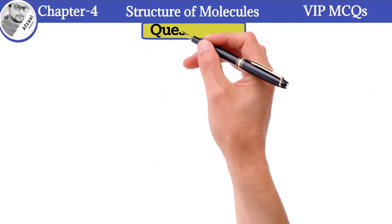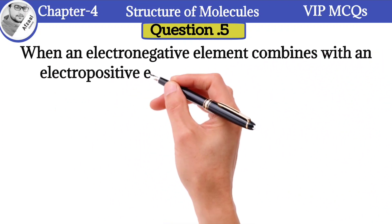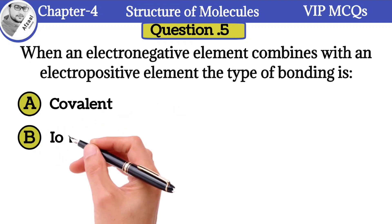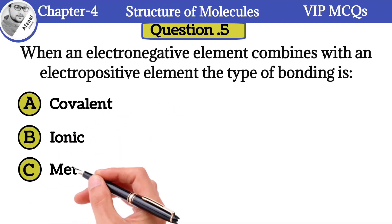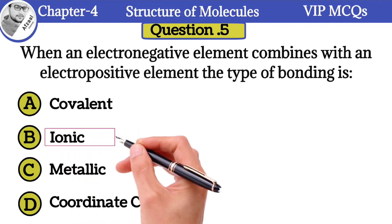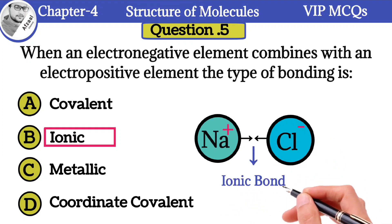Question number 5: When an electronegative element combines with an electropositive element, the type of bonding is: A) Covalent, B) Ionic, C) Metallic, D) Coordinate covalent. The correct option is ionic. For example, sodium is an electropositive element containing positive charge, while chlorine is an electronegative element and contains negative charge. When they react, the bond formed between these two elements is known as ionic bond.